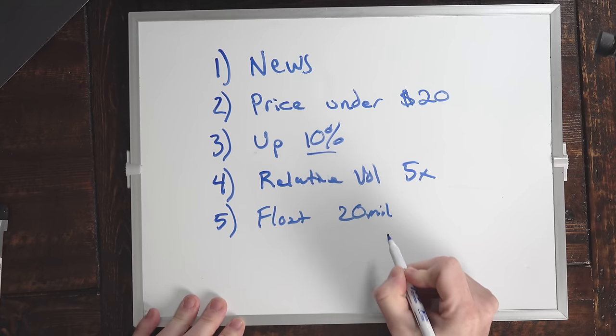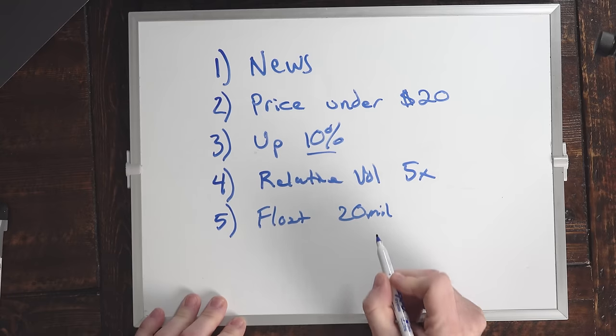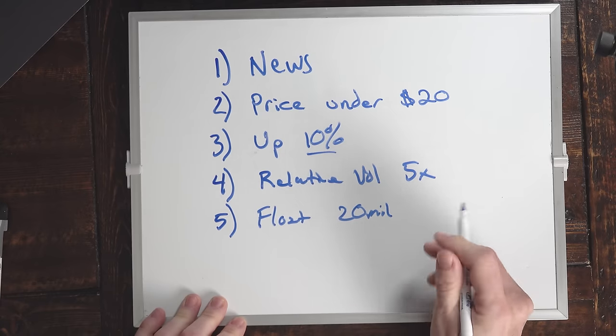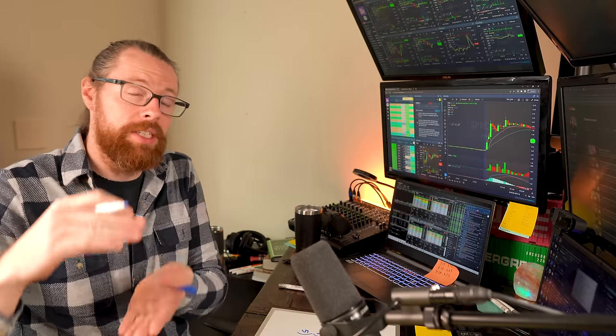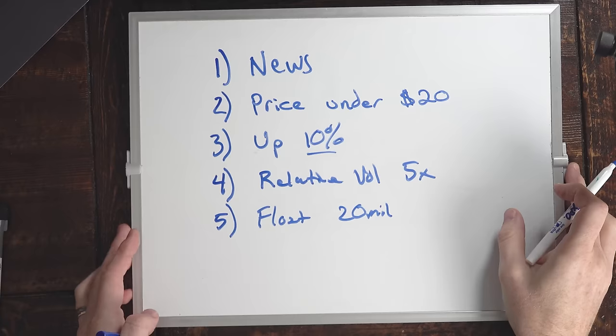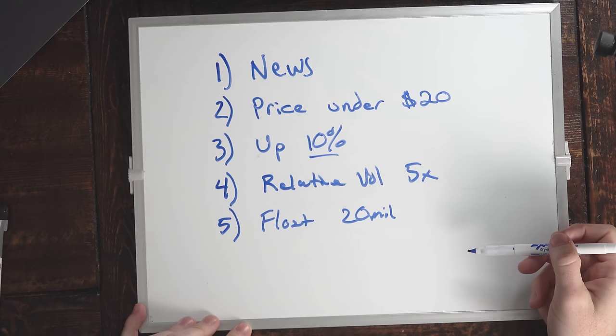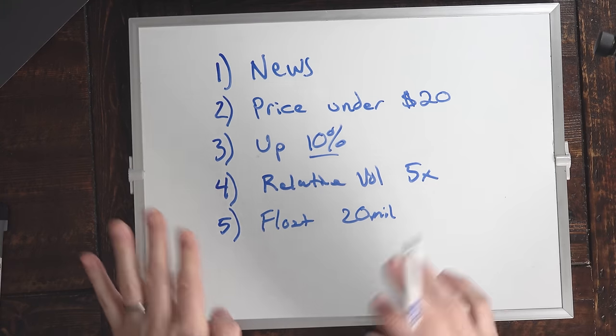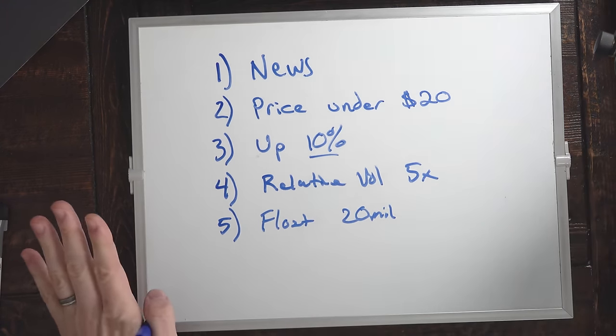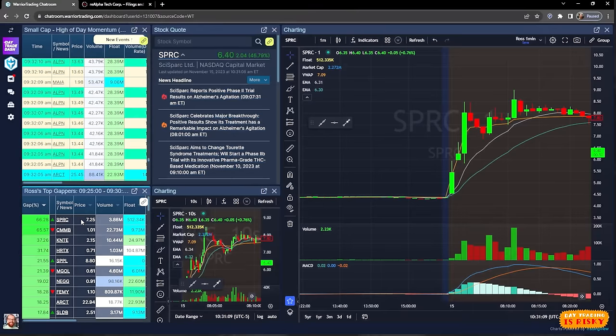Number five: the stock has to have a float of less than 20 million shares. The float is the number of shares available to trade. A float of less than 20 million shares represents a low supply level. When you have a stock with low supply, and they come out with news, and the price is attractive to retail traders, there's a lot of demand — and that creates a supply-demand imbalance. That's what creates the big move.